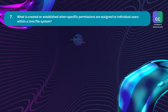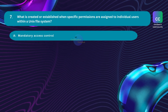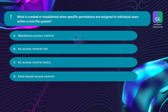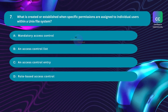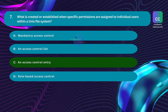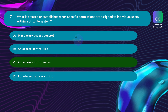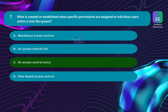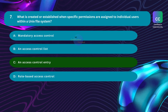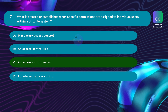Question number seven: what is created or established when specific permissions are assigned to individual users within a Unix file system? Option A: mandatory access control. Option B: an access control list. Option C: an access control entry. Option D: role-based access control. The correct answer is option C: an access control entry (ACE). An ACE is a fundamental component of access control mechanisms, representing a rule that dictates access permissions for a particular user or group to a specific resource. Assigning permissions to individual users establishes an access control entry governing access to the file system resource.